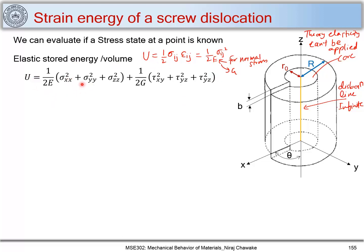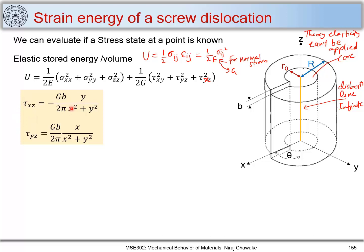We can write the elastic stored energy as: u = (1/2e)(σ_xx² + σ_yy² + σ_zz²) + (1/2g)(τ_xy² + τ_yz² + τ_xz²). For a screw dislocation, we know there are no normal stress components — we have only shear components, that is τ_xz and τ_yz.